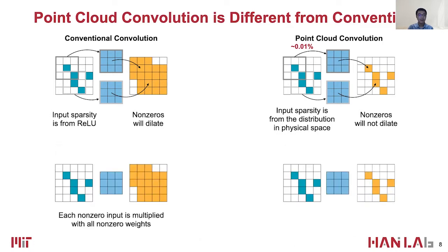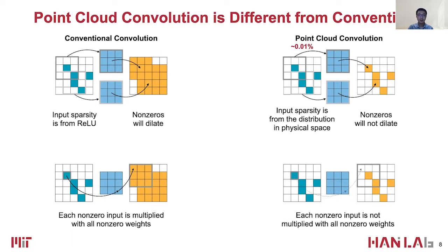In conventional convolution, even with sparse inputs, each non-zero input pixel is multiplied with all non-zero weights. Such regular computation pattern is heavily exploited by all previous sparse neural accelerators. However, in point cloud convolution, the relationship among non-zero input points, non-zero output points, and weights are determined explicitly by calculation instead of pointer arithmetic.